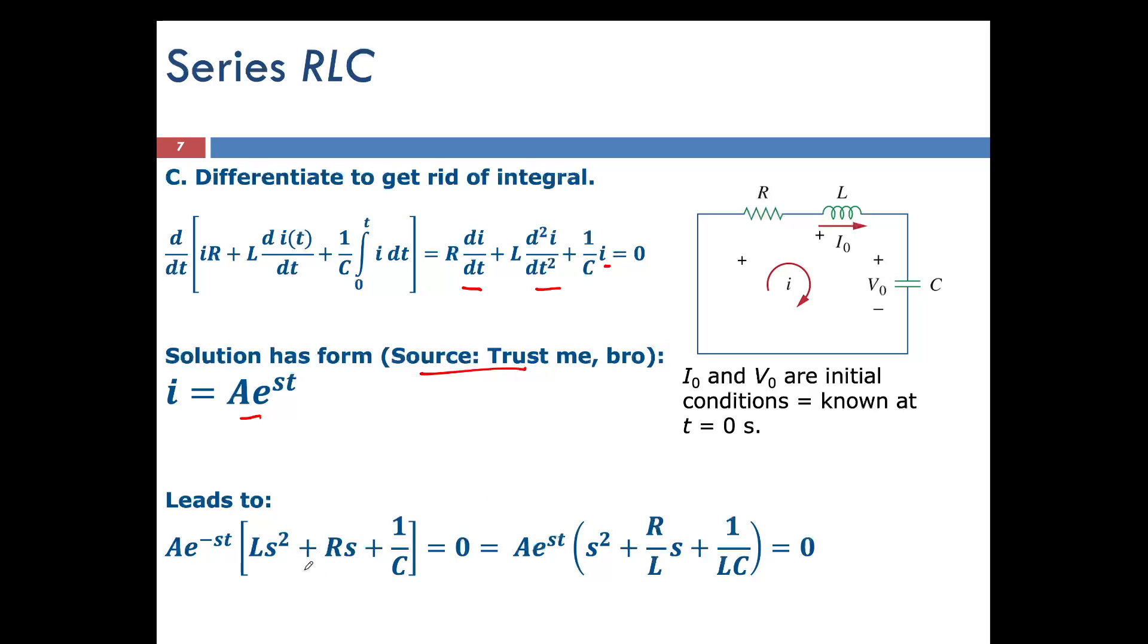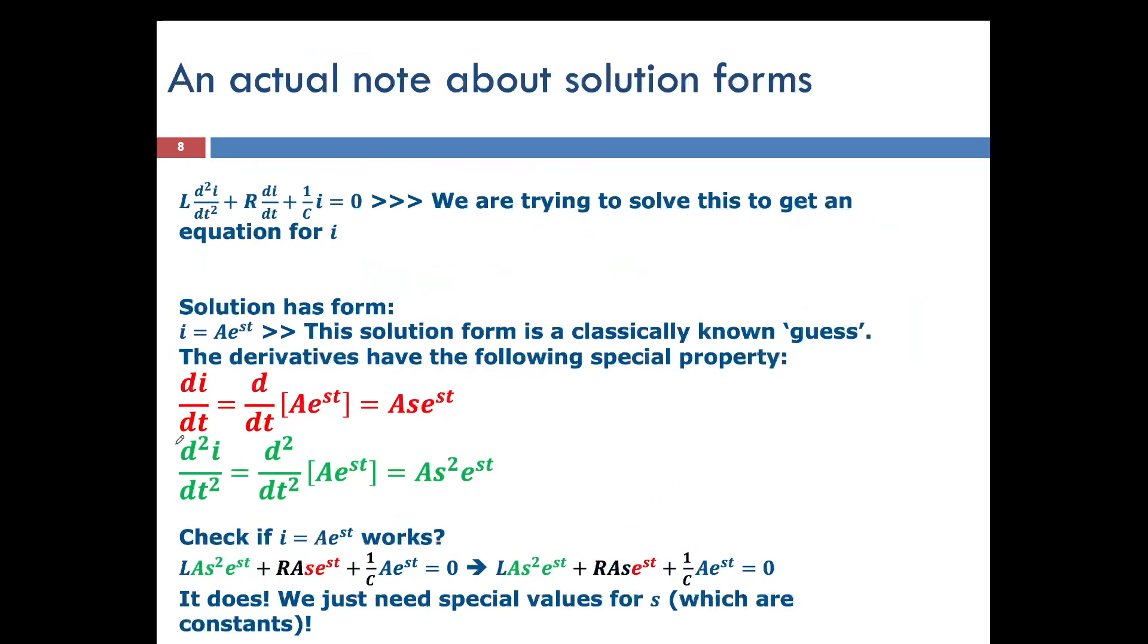The reason that we do that is that if we take this guess, put it into the I here, here and here, we see that we're going to get a solution that looks like this, where the Ae^(st), this term of our guess can be pulled out and then we can separate this into two parts, our guess and this special characteristic equation. You can do this on your own and I'll show, this here gives you a little example if you need to pause and check this, but you can see that our guess will work and then this is kind of a classic guess.